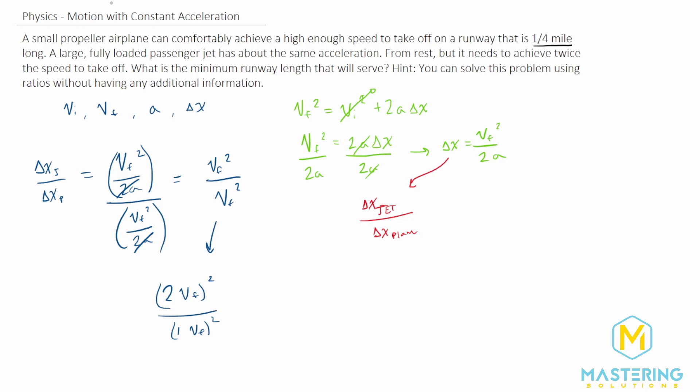So now when we square these, we get 4 times the final velocity divided by the final velocity of the plane, which will give us the delta x.